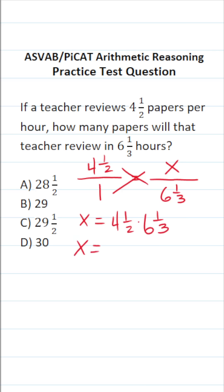The first thing I'm going to do is convert these mixed numbers to improper fractions. Four times two is eight plus one is nine. So four and a half is the same thing as nine over two. Six times three is 18 plus one is 19. So this is 19 over three.